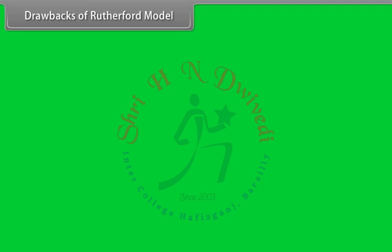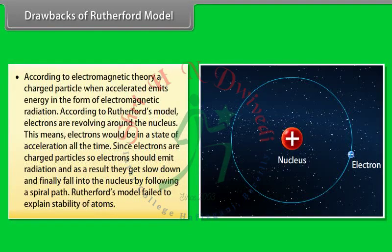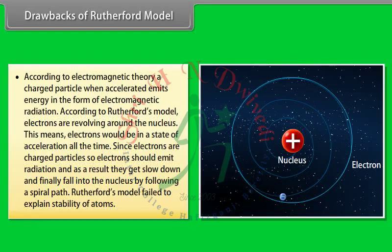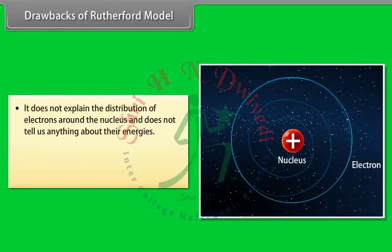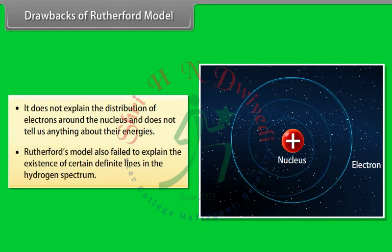Drawbacks of Rutherford model: 1. According to electromagnetic theory, a charged particle when accelerated emits energy as electromagnetic radiation. According to Rutherford's model, electrons revolve around the nucleus and are thus always accelerating. They should therefore emit radiation, slow down, and finally fall into the nucleus by following a spiral path. Rutherford's model failed to explain the stability of atoms. 2. It does not explain the distribution of electrons around the nucleus or their energies. 3. It also failed to explain the existence of certain definite lines in the hydrogen spectrum.